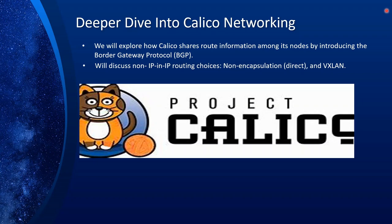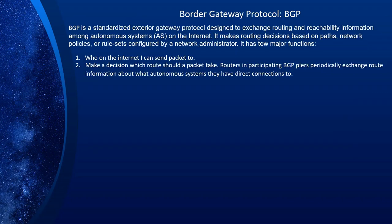IP-in-IP has some overhead, though not much — but there is overhead. So if there are situations where you don't really need IP-in-IP, it's better to not use any encapsulation — we call it direct — which makes it faster. There's also another option for VXLAN for situations where you can't use direct communication or IP-in-IP routing. It's kind of similar to Flannel, which we discussed in the previous presentation. BGP is a standardized exterior gateway protocol designed to exchange routing and reachability information among autonomous systems on the internet — the internet is really run by BGP.